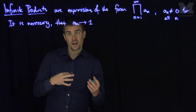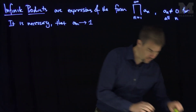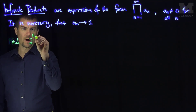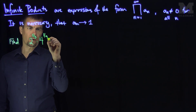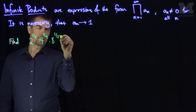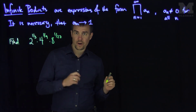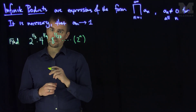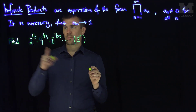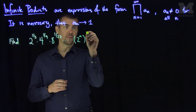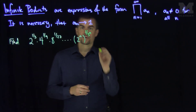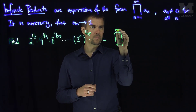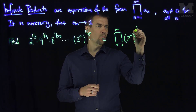Let's see an example of one particular way to evaluate an infinite product. We'll find two to the one-third power times four to the one-ninth power times eight to the one over twenty-seven power, and so on. The terms in this product look like two to the n — those are powers of two — raised to one over three to the n. So written in product form, this is the product as n goes from one to infinity of two to the n, raised to the one over three to the n.